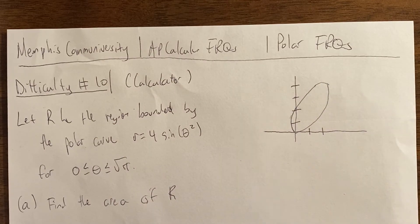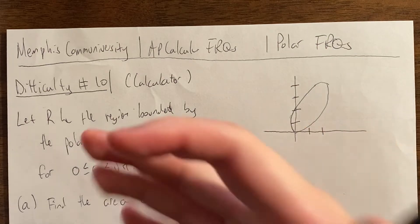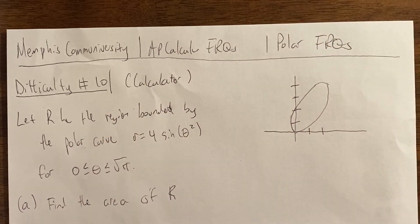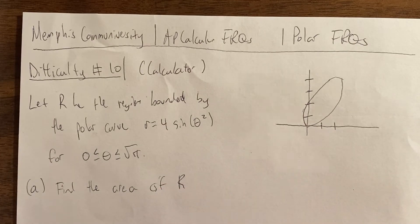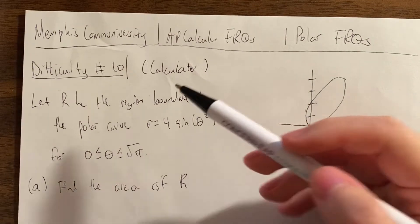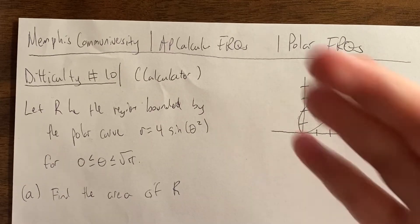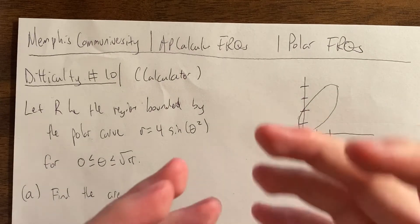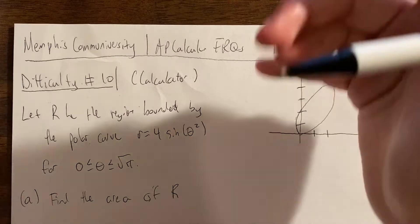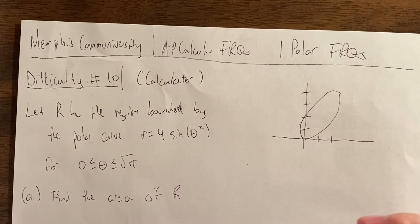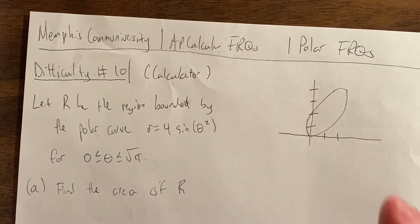If you don't know our channel, what we do is we go from difficulty 1 through 10 in every single free response question — the AB ones like graph free response questions, table free response questions, accumulation free response questions, area and volume, things like that. But we also do that for BC stuff like parametric, Taylor series, and polar. Taylor series is notoriously the hardest ones, but I think polar is really underrated in terms of its difficulty.